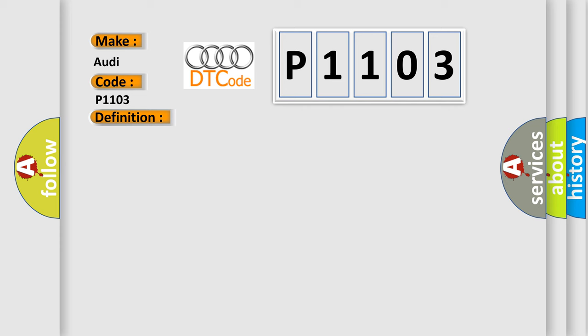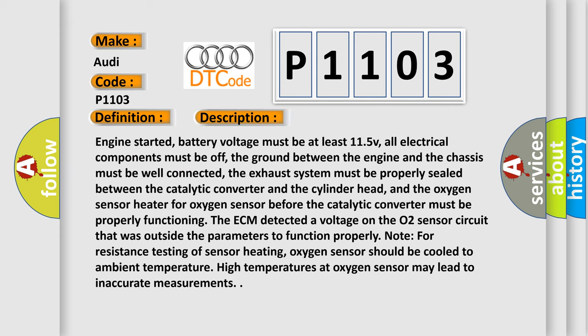Here is a short description of this DTC code. Engine started, battery voltage must be at least 11.5 V, all electrical components must be off, the ground between the engine and the chassis must be well connected, the exhaust system must be properly sealed between the catalytic converter and the cylinder head, and the oxygen sensor heater for the oxygen sensor before the catalytic converter must be properly functioning. The ECM detected a voltage on the O2 sensor circuit that was outside the parameters to function properly. Note: for resistance testing of sensor heating, the oxygen sensor should be cooled to ambient temperature, as high temperatures at the oxygen sensor may lead to inaccurate measurements.